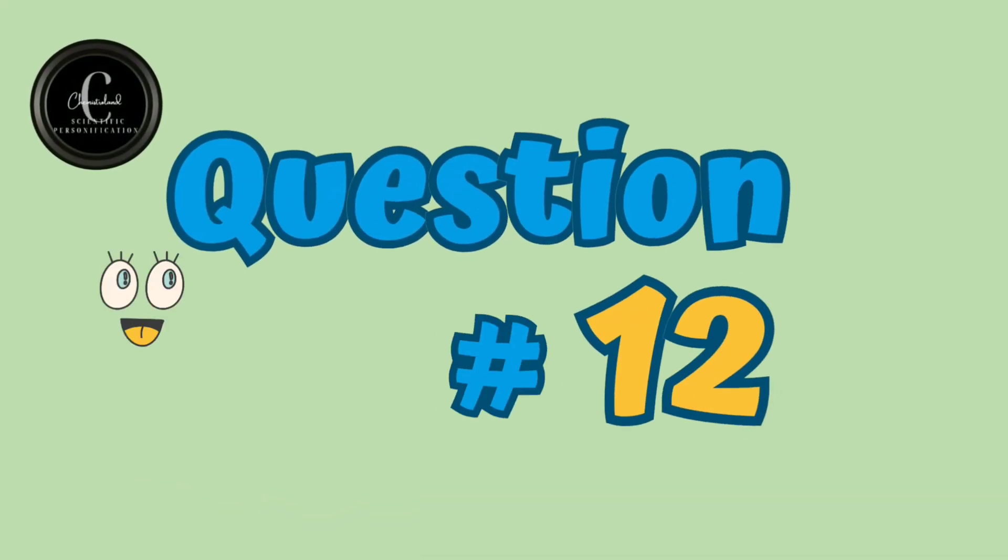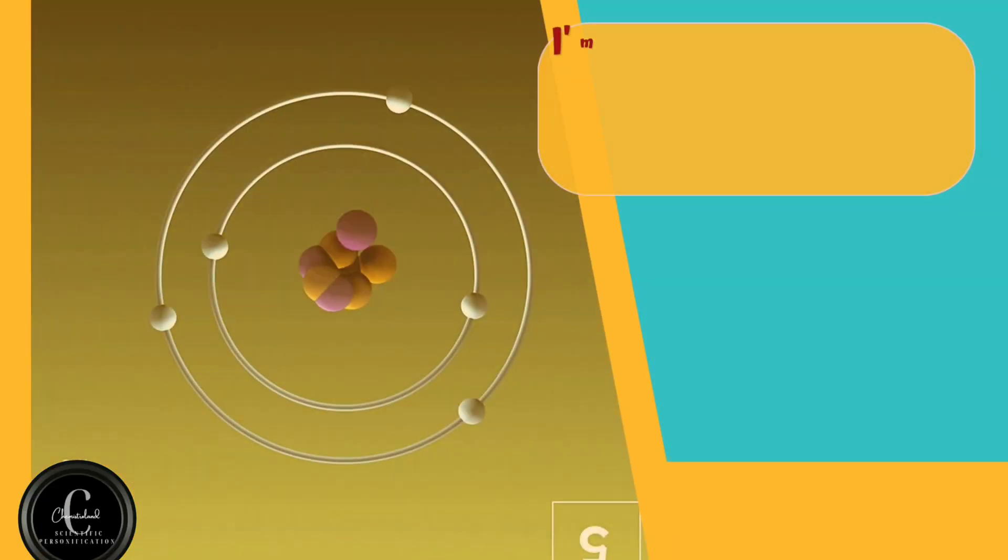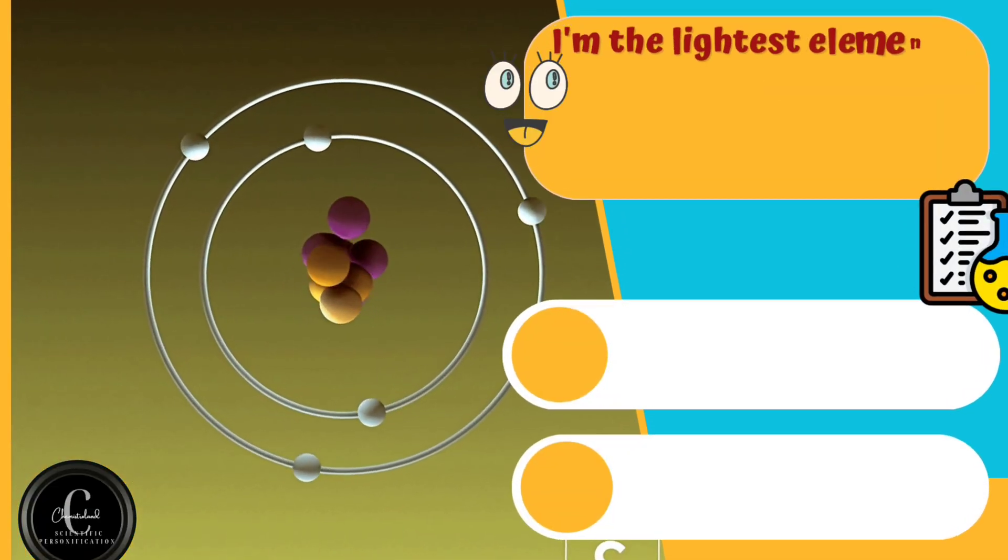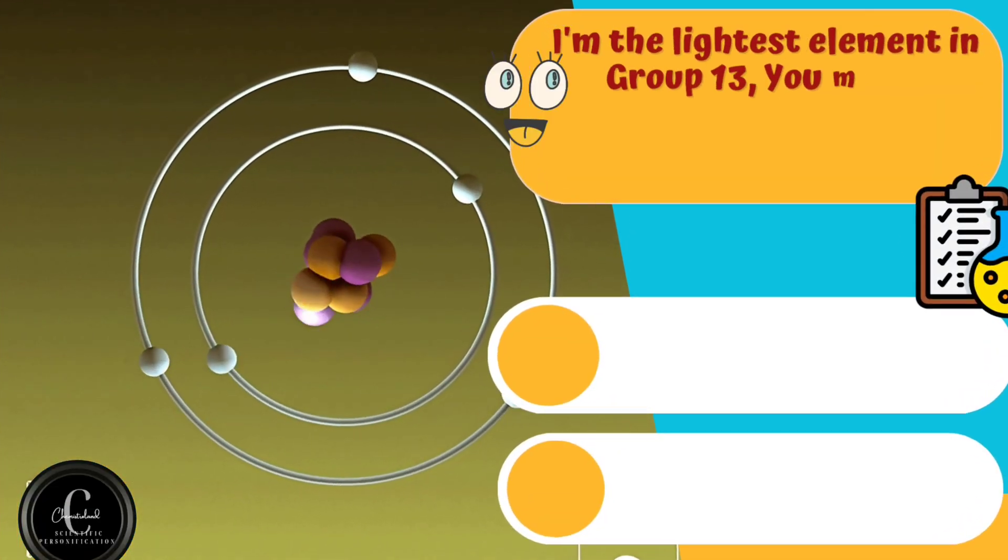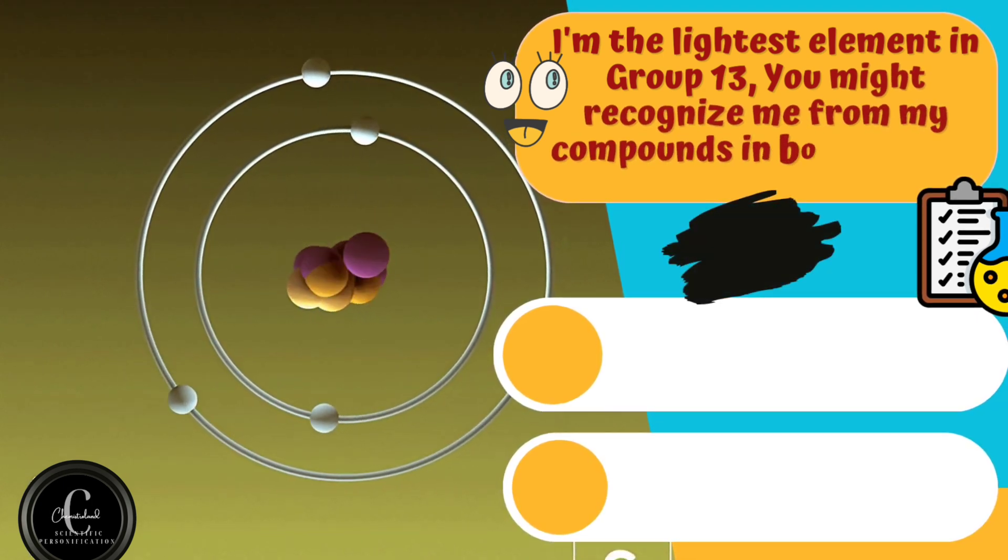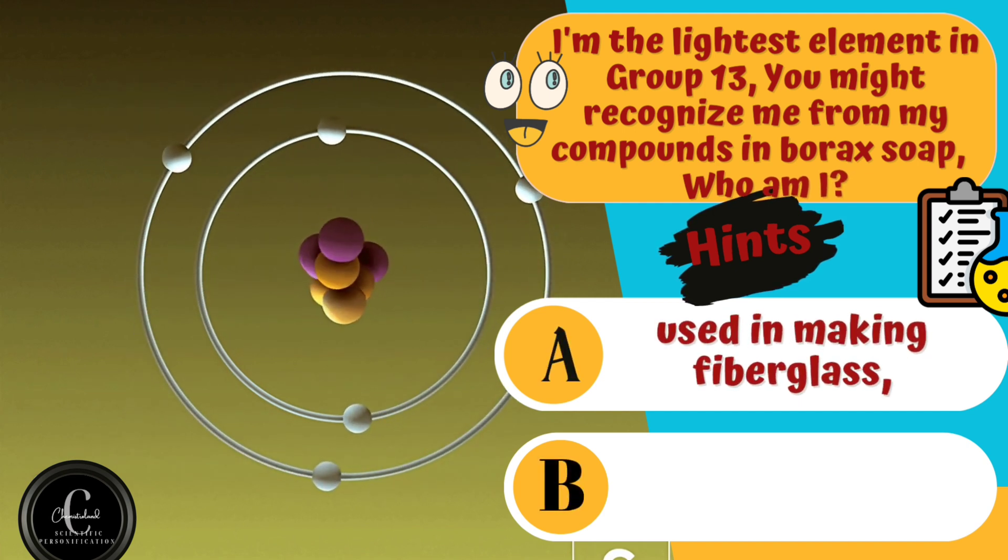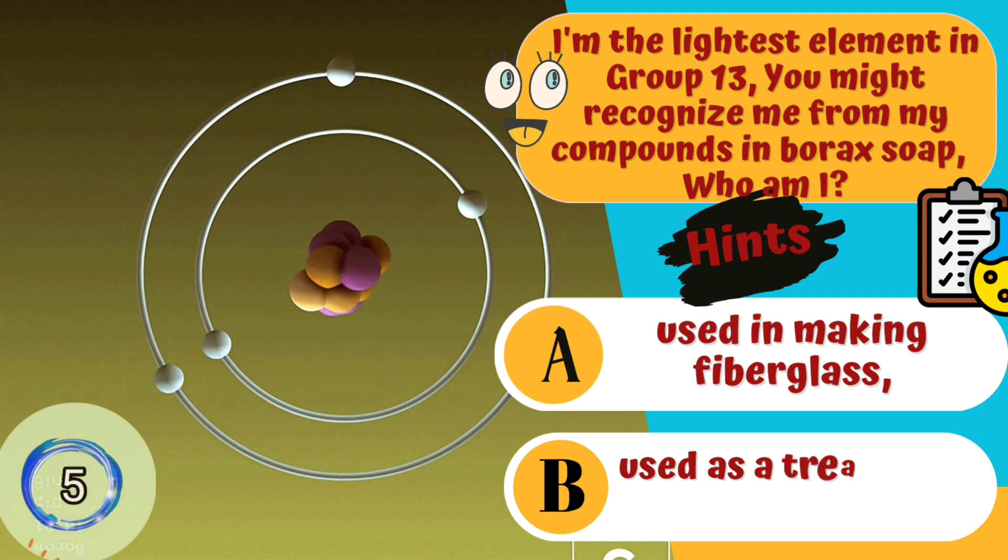Question number twelve is about element having an interesting history in metallurgy. I'm the lightest element in group thirteen. You might recognize me from my compounds in borax soap. Who am I? Hints are A. Used in making fiberglass. B. Used as a treatment for arthritis.